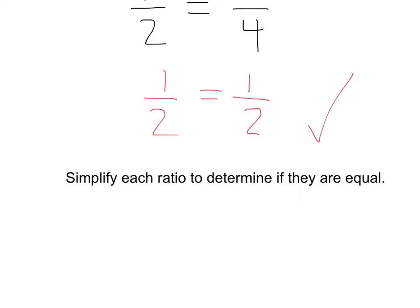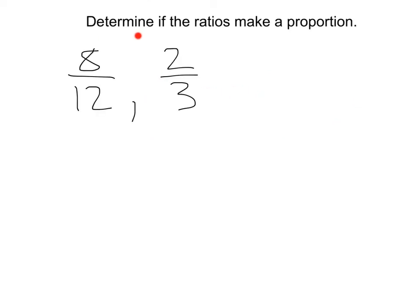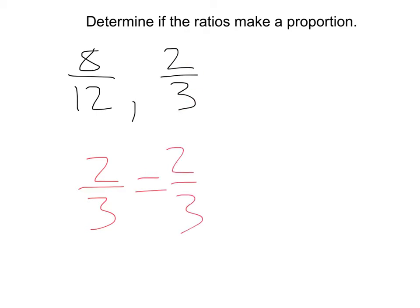Let's do some examples. Determine if the ratios make a proportion. Here we have a ratio of 8 to 12 and a ratio of 2 to 3. Let's go ahead and simplify. 8/12 can simplify to 2/3 — if we divide 8 by 4 and divide 12 by 4, we'll get 2/3, which is equal to our other ratio of 2/3. So yes, these do form a proportion.